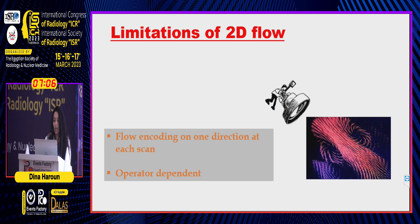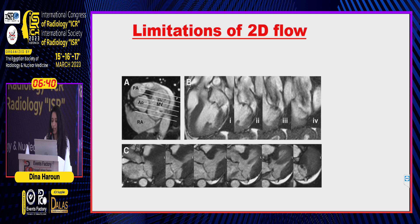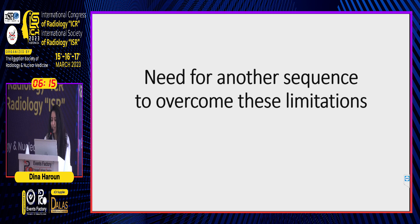The other side of the coin: the limitations of 2D flow. It measures flow encoding in one direction only in each scan, and it is operator dependent, also liable to artifacts from arrhythmias. Another limitation is that it cannot measure flow across the mitral and tricuspid valves — the AV valves — only across tubular structures like the aorta and pulmonary vessels. This gives rise to the need for another sequence to overcome these limitations.